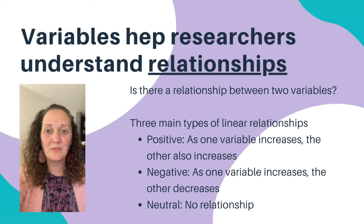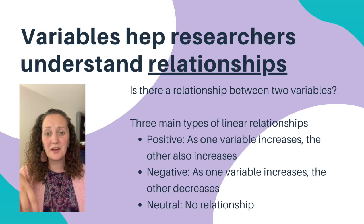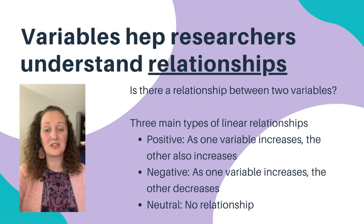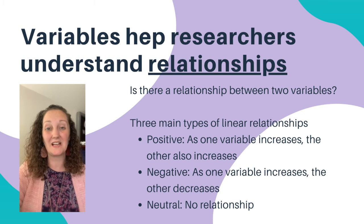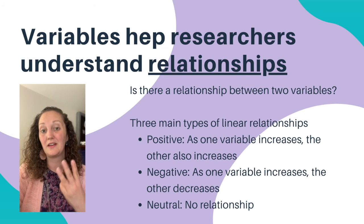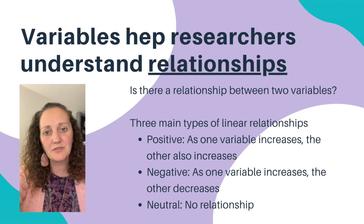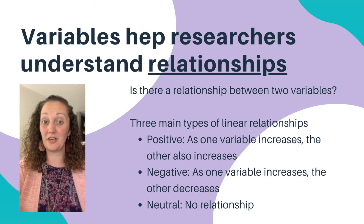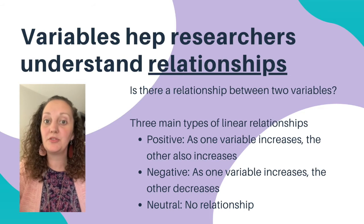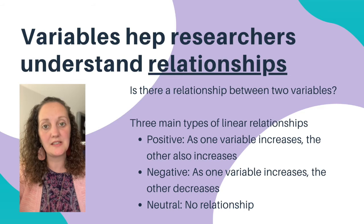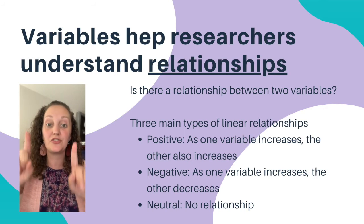Variables can also help researchers understand relationships. So is there a relationship between two variables? When we talk about linear relationships — which is what we're going to talk about in this class — there are only three kinds: positive, negative, and neutral or no relationship. A positive relationship states that as one variable increases, the other variable also increases, or as one variable decreases, the other also decreases. The variables move in the same direction — when one changes, the other also changes in the same direction.